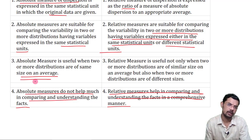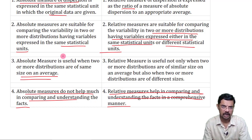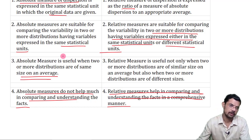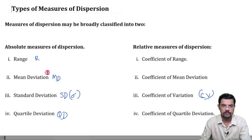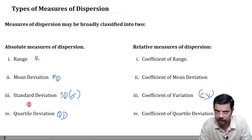Sometimes absolute measures can be used for comparing, but only in certain cases — such as when distributions have the same units and the same average. Otherwise, relative measures are generally used. We shall take each measure — range, mean deviation, standard deviation, and quartile deviation — one by one in different videos to keep them short. Thank you.